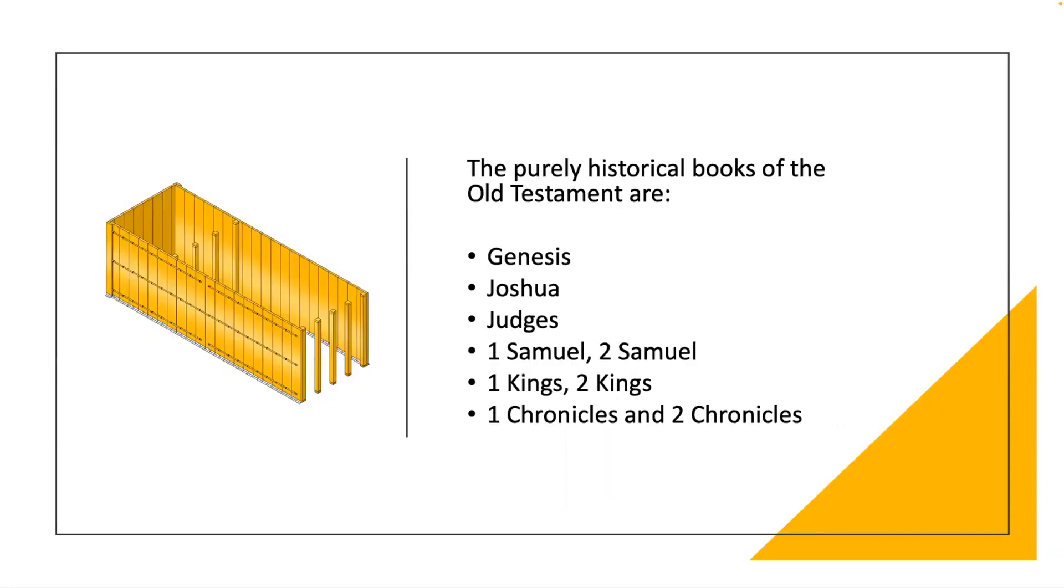The purely historical books of the Old Testament are Genesis, Joshua, Judges, 1 and 2 Samuel, 1 and 2 Kings, and 1 and 2 Chronicles.